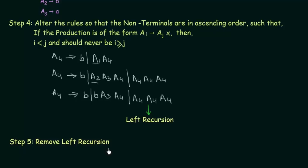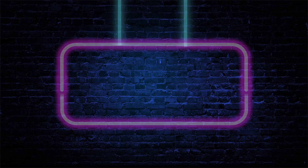To summarize: you follow steps one through four to convert a given CFG to its equivalent Greibach Normal Form. The conversion is not yet complete because we have encountered left recursion. In the next lecture we will discuss how to remove left recursion, and after doing so, the CFG will be completely converted to Greibach Normal Form. Thank you for watching.